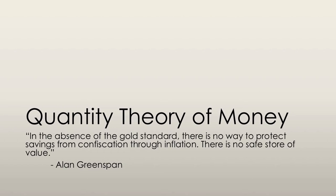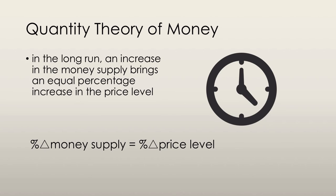The last thing I'm going to mention in this series is something known as the quantity theory of money. The quantity theory of money is simply this proposition that, in the long run, an increase in the quantity of money brings an equal percentage increase in the price level.